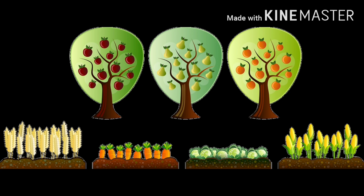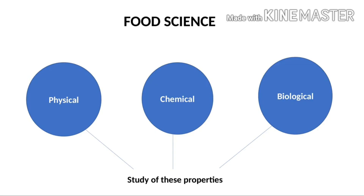Have you ever wondered why the onion changes color when it cooks, or how potatoes from the farm get converted to a convenience food that we all love? Who are the people behind this — are they food technologists or food scientists? What is the difference between food science and food technology? When we study the physical, chemical, and biological properties of food, it is called food science.